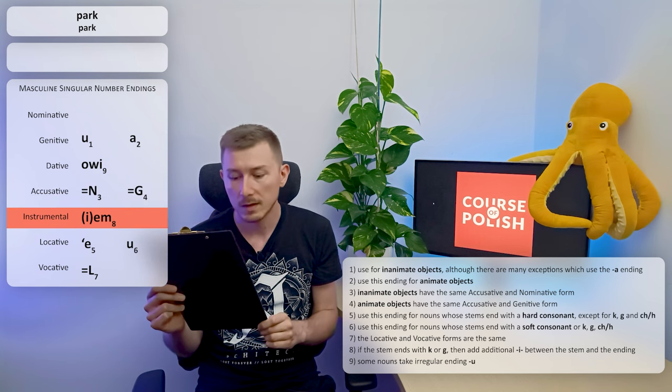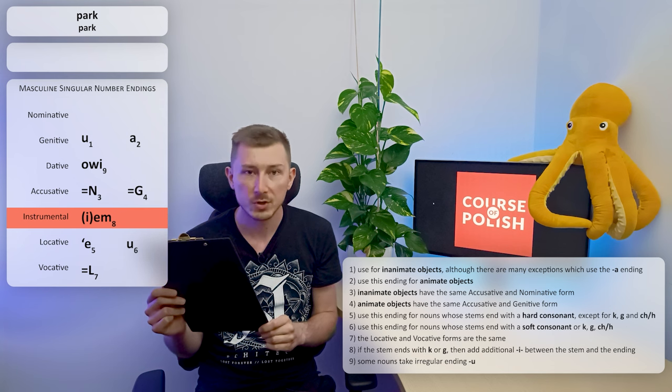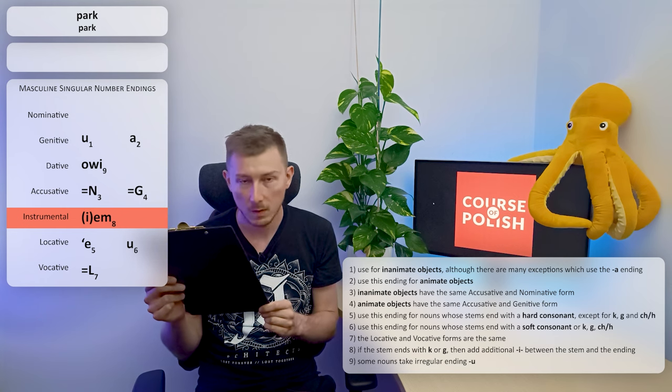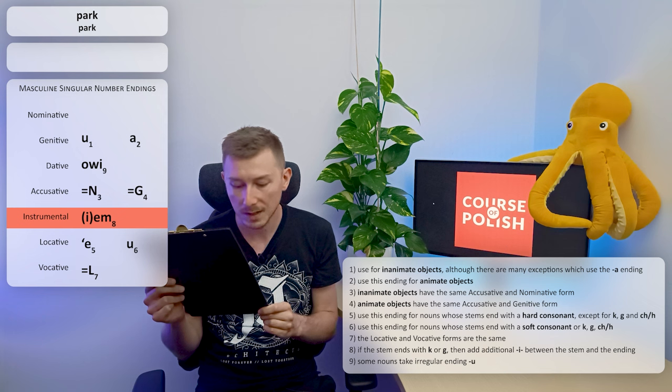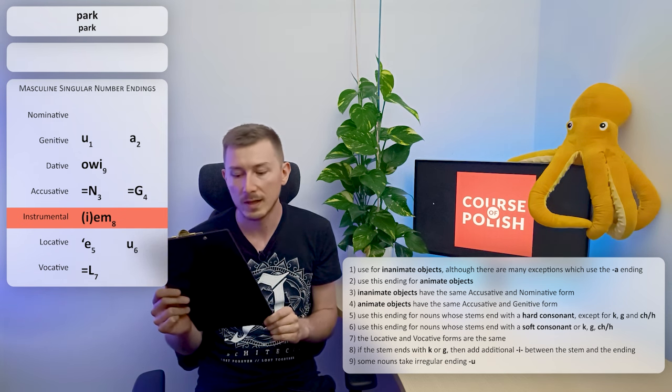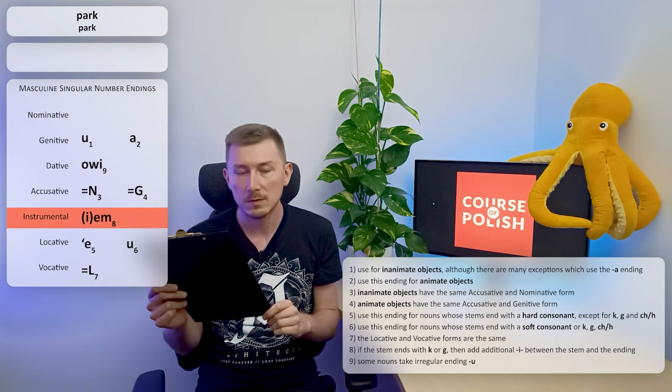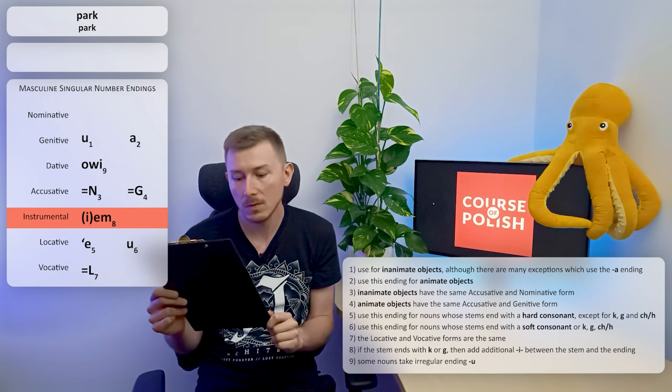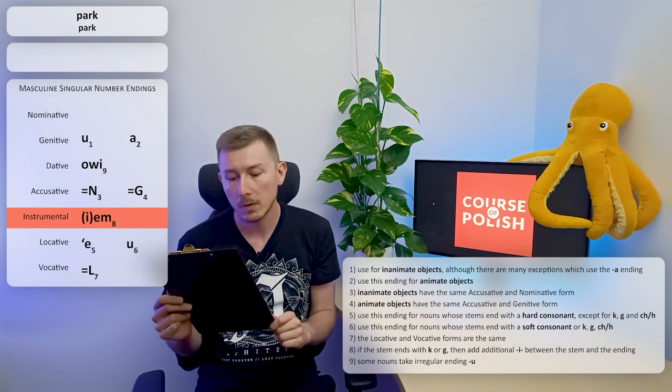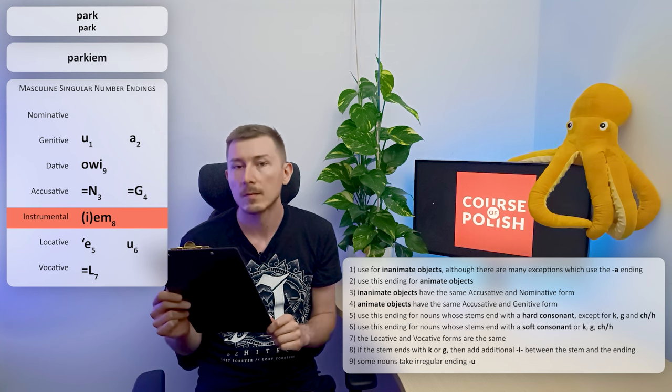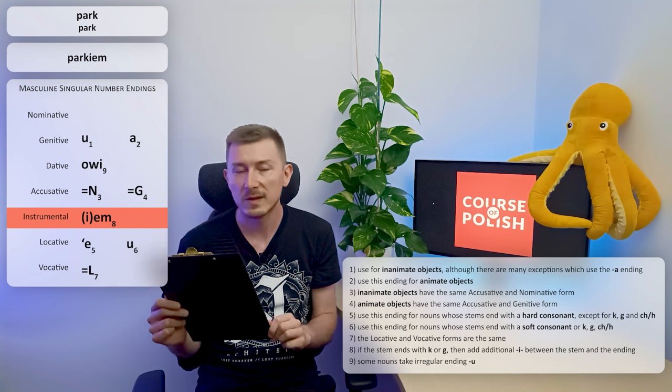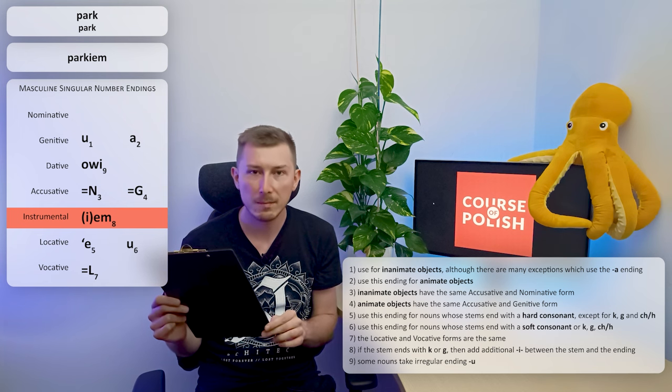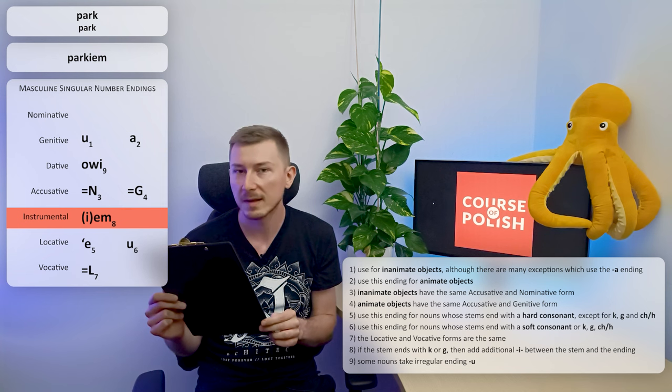The next case, instrumental. Here we have just one ending, EM, with an optional E letter, and also rule number eight: if the stem ends with K or G, then add additional E between the stem and the ending. So now we know when to use this optional E. We should use it if a stem ends with K or G. Our stem is PARK. On the end we have the consonant K, so we have to use this additional E. The final form for instrumental case will be PARKIEM. Without the E it would sound like this: PARKIEM. Try to listen to the difference. PARKIEM, PARKIEM. That's the difference.